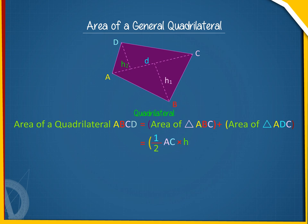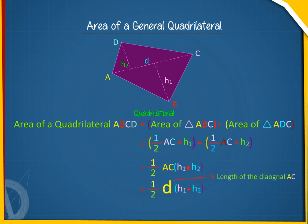Plus 1/2 AC times H2, which equals 1/2 AC times (H1 + H2), equals 1/2 D times (H1 + H2), where D denotes the length of the diagonal AC.